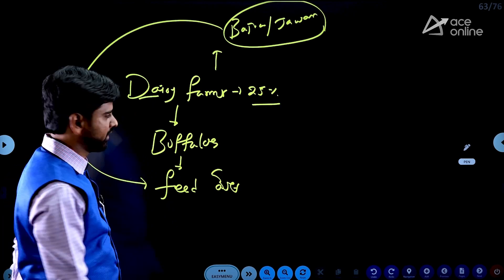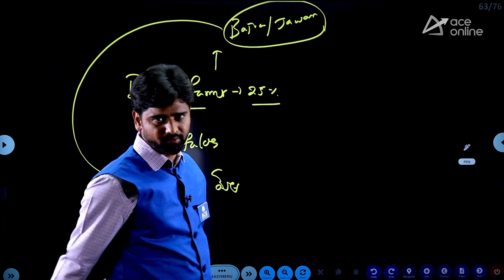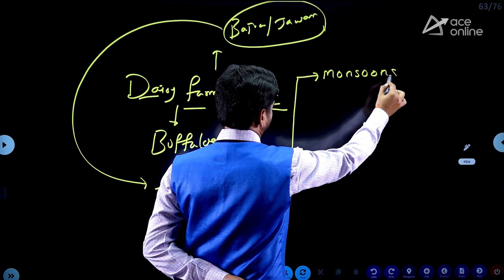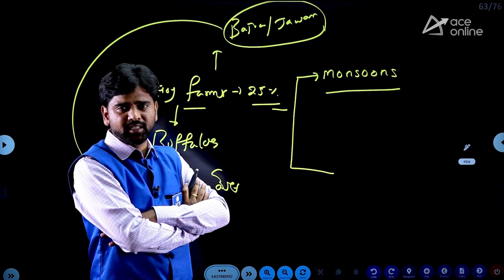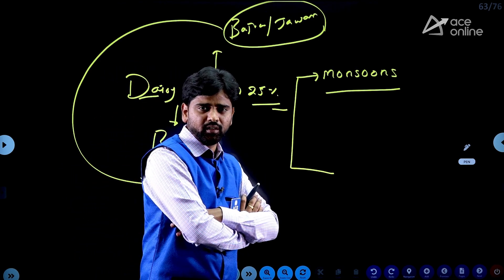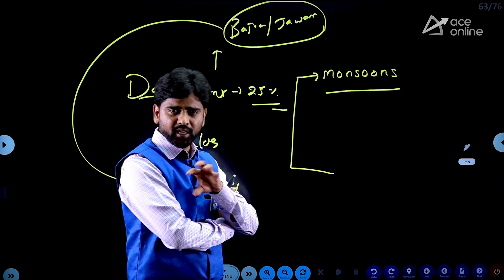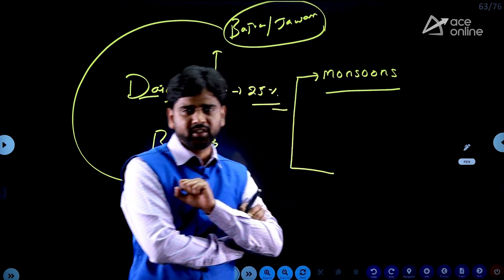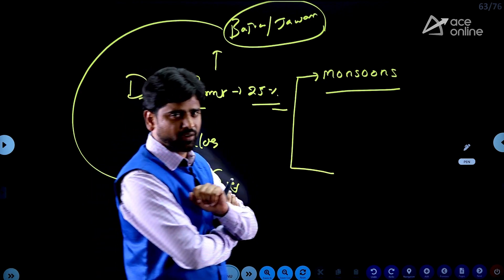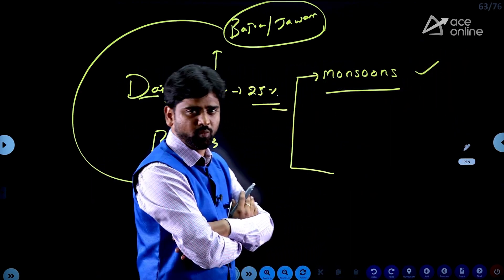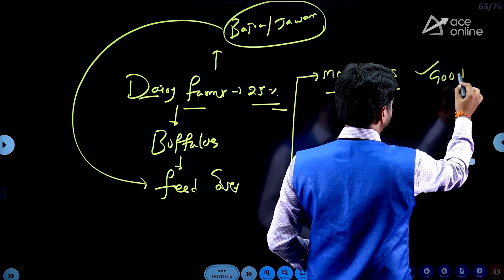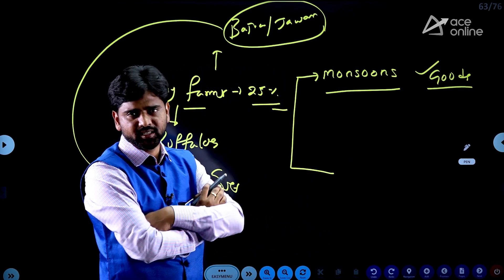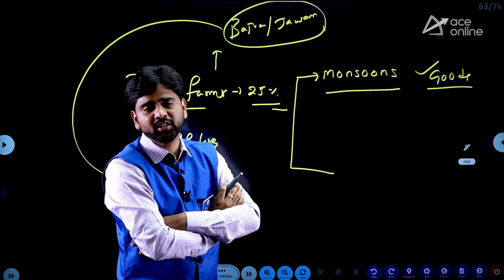Dairy farming has a great advantage, especially in dry land areas. In the Royal Sima region, Northern Telangana, Southern Telangana — areas with limited irrigation facilities and only rain-fed agriculture — there is a lot of advantage to dairy farming. When monsoon is good, food production is good, and cattle grazing generates additional income.